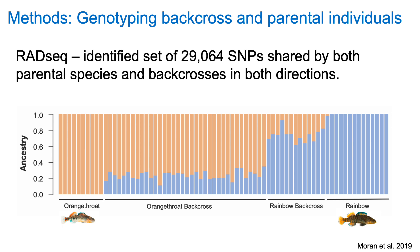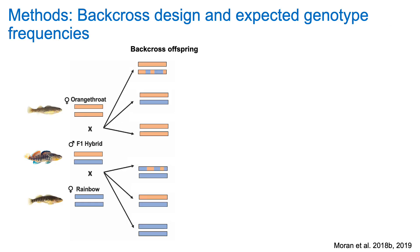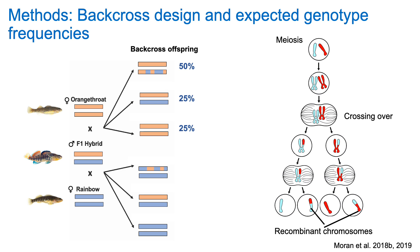I used RAD-seq to identify a set of 29,000 SNPs shared by both parental species and by backcrosses in both directions. The parental species used for genotyping were wild-caught individuals, and the backcrosses were generated in the laboratory from wild-caught F1 hybrid males backcrossed to purebred females of either species. Crossing over during meiosis results in recombinant gametes — in a given chromosomal tetrad, crossing over only occurs in two of the four DNA strands. This predicts that F1 gametes will be 50% recombinant and 50% non-recombinant, giving a 50% chance of a recombinant chromosome, 25% chance of non-recombinant heterozygous, and 25% chance of non-recombinant homozygous chromosome pairs.